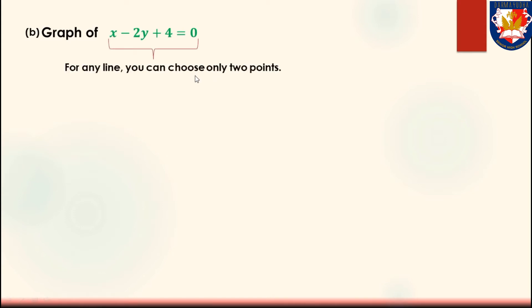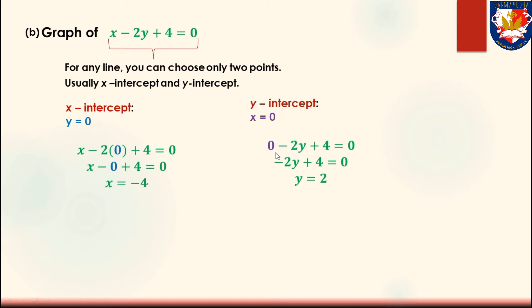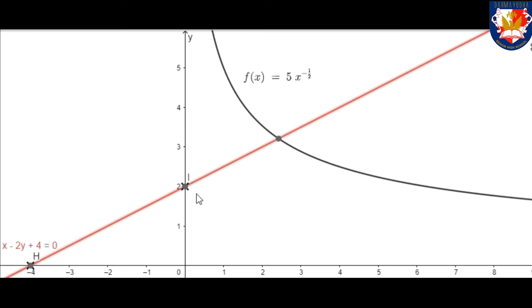We have to sketch the graph of x minus 2y plus 4 equals 0 before finding the intersection with the previous curve. This is a line equation, so we only need two points — typically the x-intercept and y-intercept. For the x-intercept, y equals 0, giving x equals negative 4. For the y-intercept, x equals 0, giving y equals 2. So we have points H at (negative 4, 0) and I at (0, 2). We plot and connect these to form the straight line.